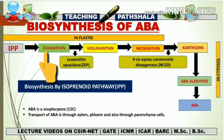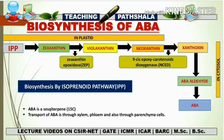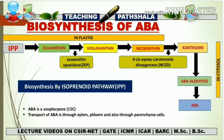IPP is a 5-carbon compound. When it converts into zeaxanthin, zeaxanthin is a 40-carbon compound. Successive additions of IPP convert the 5-carbon IPP into 40-carbon zeaxanthin. This 40-carbon zeaxanthin is then converted into violaxanthin in the presence of zeaxanthin epoxidase, abbreviated ZEP. ZEP helps in the conversion of zeaxanthin into violaxanthin, which is again a 40-carbon compound.